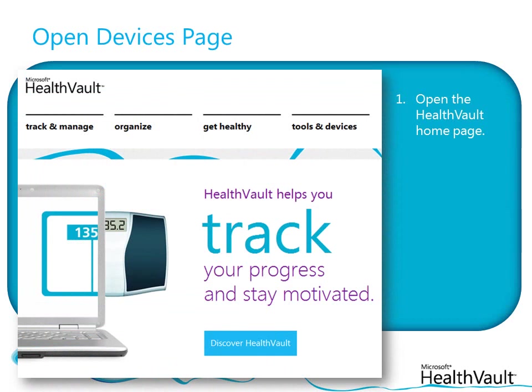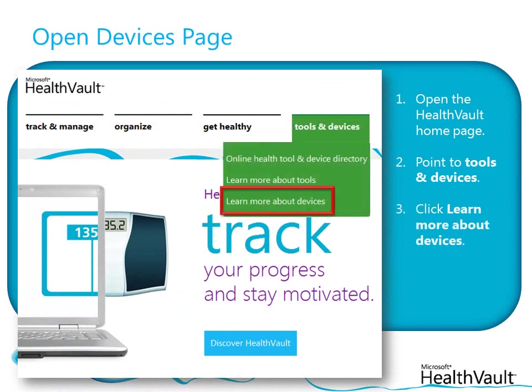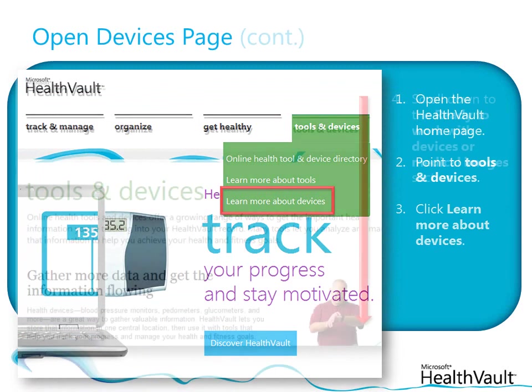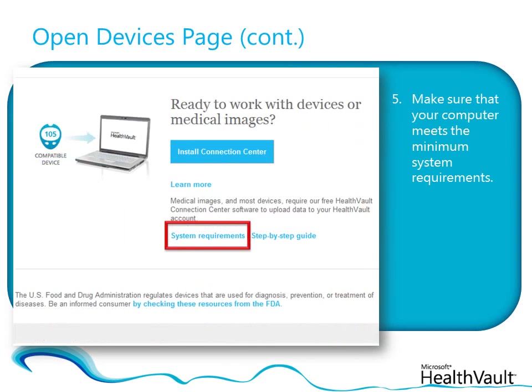Open the HealthVault homepage at www.healthvault.com, point to Tools and Devices at the top of the page, and then click Learn More About Devices. Scroll to the bottom of the page and find the Ready to Work with Devices or Medical Images section. Before you install Connection Centre, make sure that your computer meets the minimum system requirements by clicking the System Requirements link.